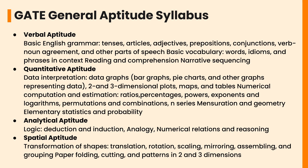Important topics under GATE 2024 syllabus for General Aptitude are as follows. In Verbal Aptitude: basic English grammar — tenses, articles, adjectives, prepositions, conjunctions, verb-noun agreement, and other parts of speech; basic vocabulary, words, idioms, and phrases in context; reading and comprehension; narrative sequencing.